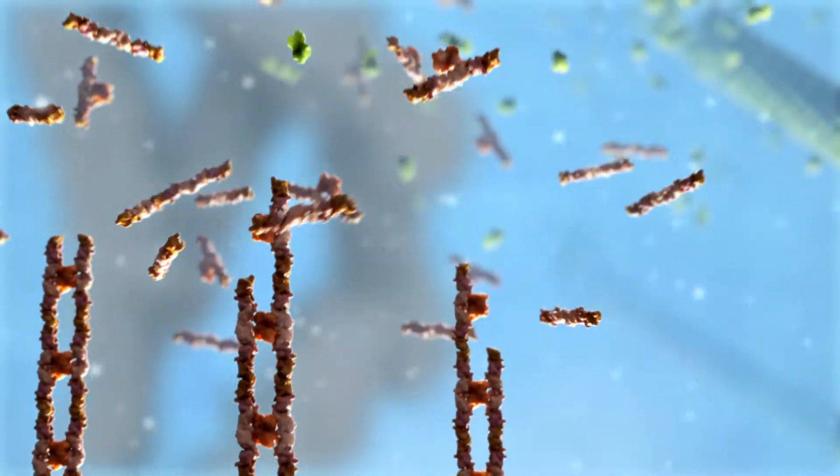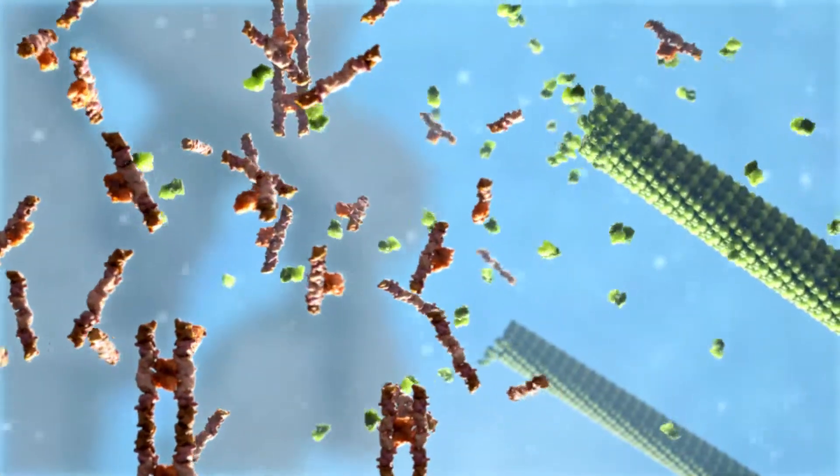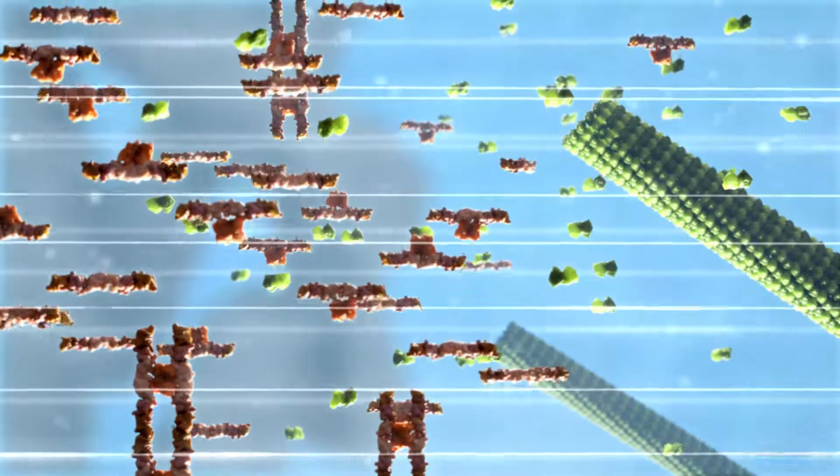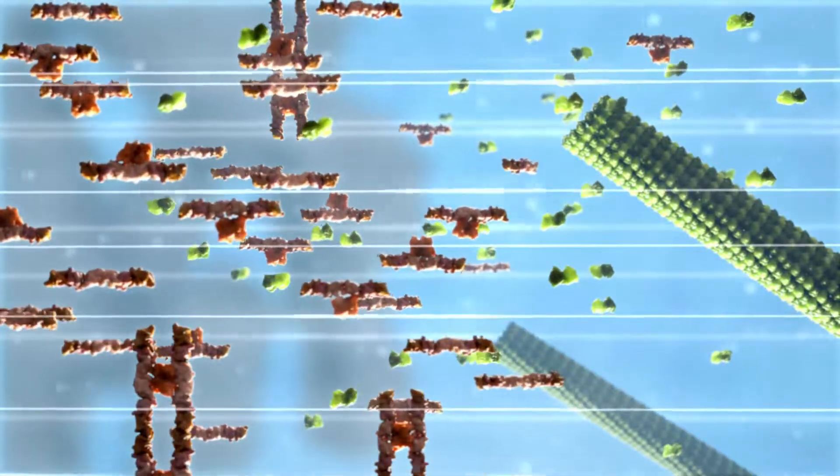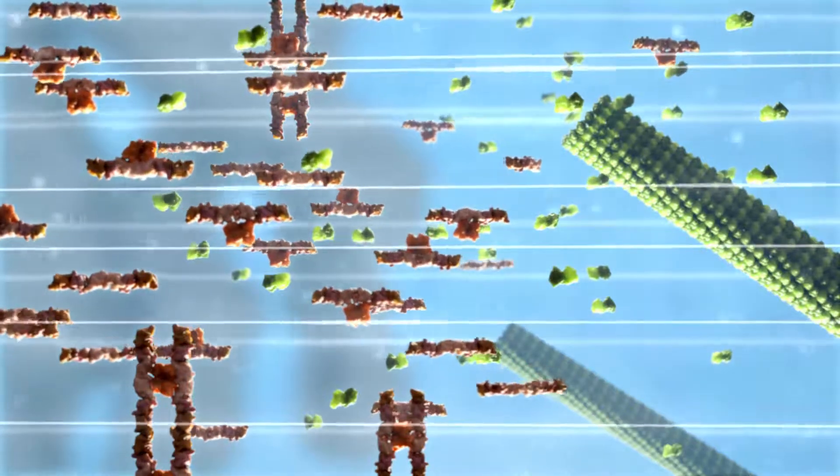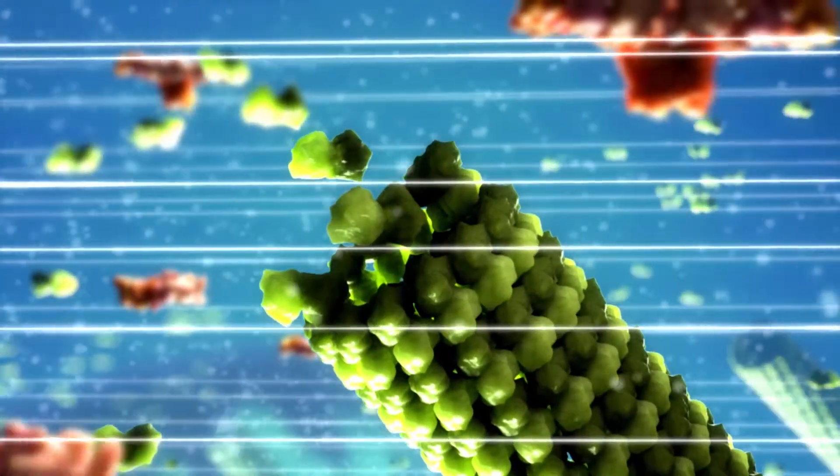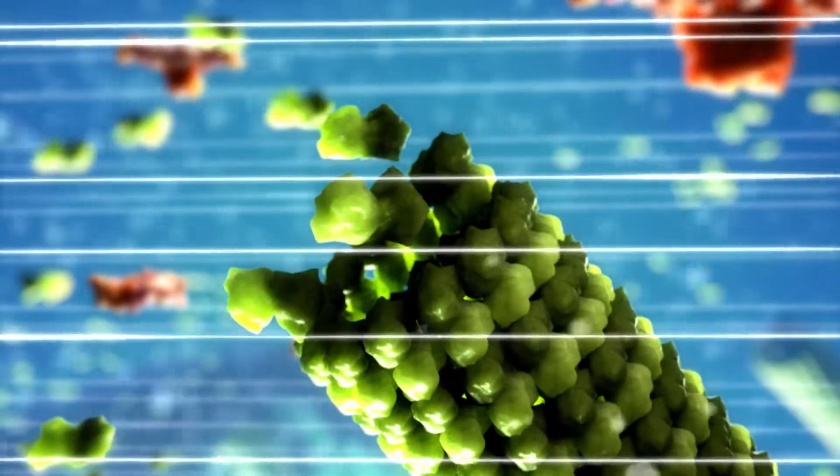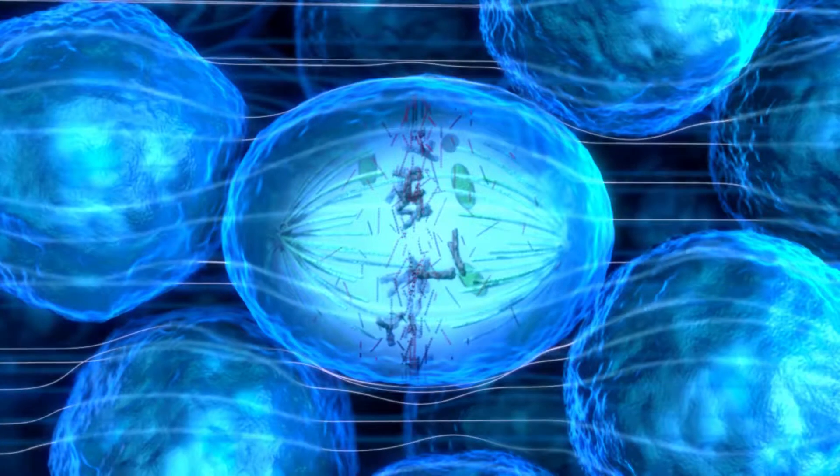Both tubulin dimers and septin molecules exhibit large dipole moments. When TT fields are activated, a uniform electric field develops within the cell, and polar molecules are subject to rotational forces. This causes tubulin dimers and septin molecules to align with the field, inhibiting normal microtubule formation and mislocalizing the contractile apparatus.